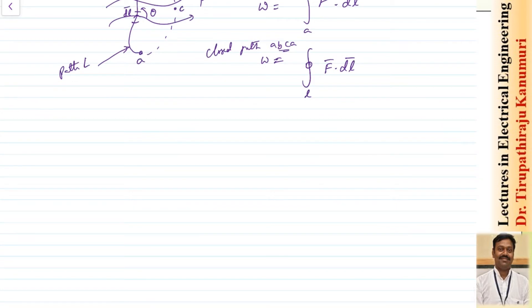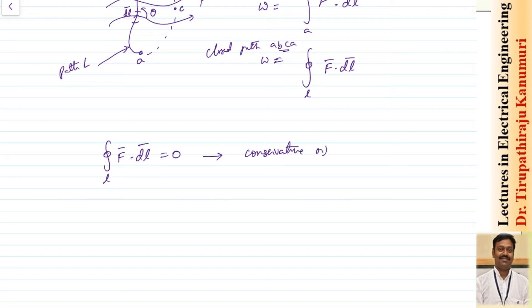In some cases, the closed line integration of f dot dl equals zero. If the closed line integral of any vector dot product with the differential length equals zero, that vector is called a conservative or lamellar vector.